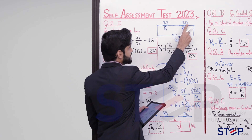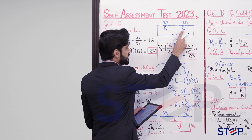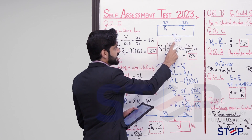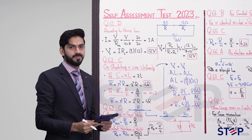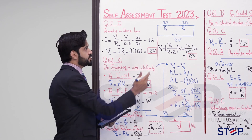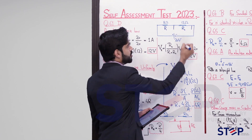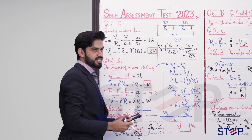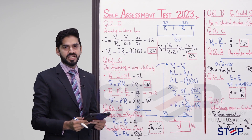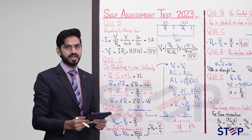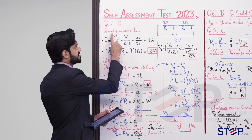We have two resistors in series — labeled R1 and R2 — and across them a 20 volt battery is connected. We are asked: what will be the potential difference across the 12 ohm resistor, meaning across R2? Students, there are two methods; let's discuss both here.